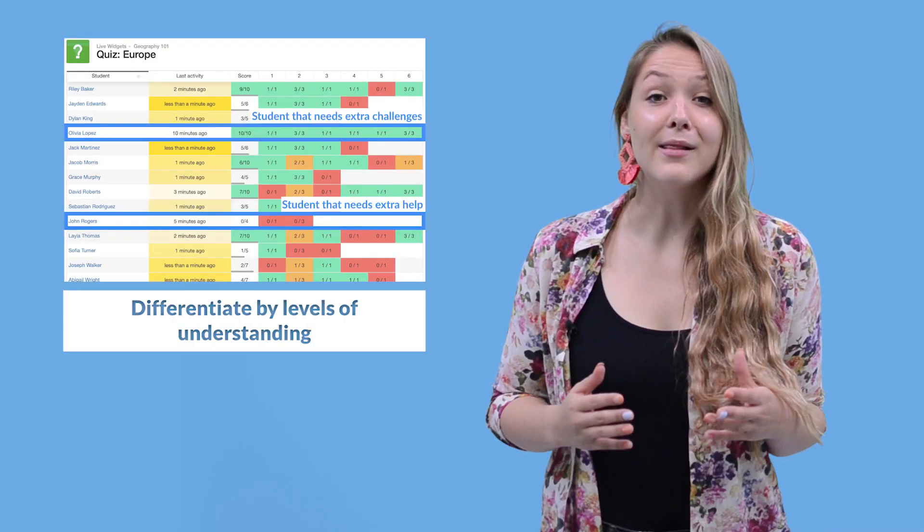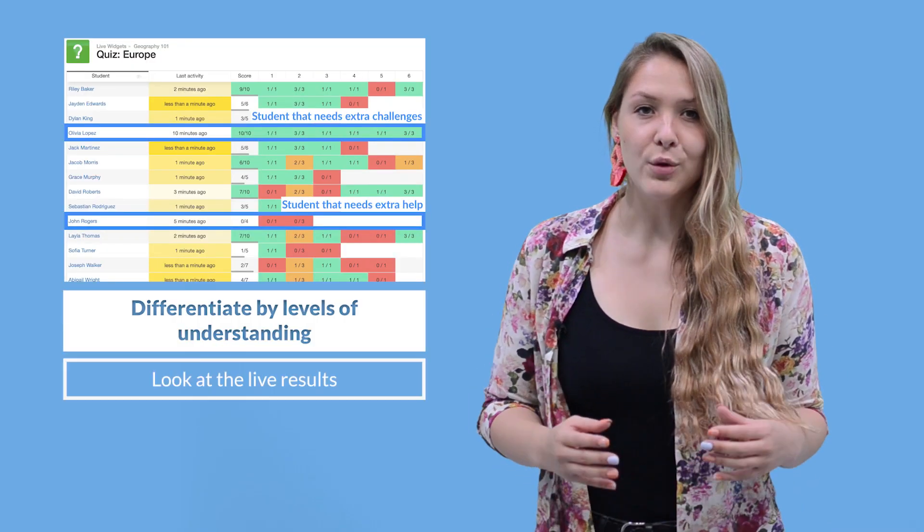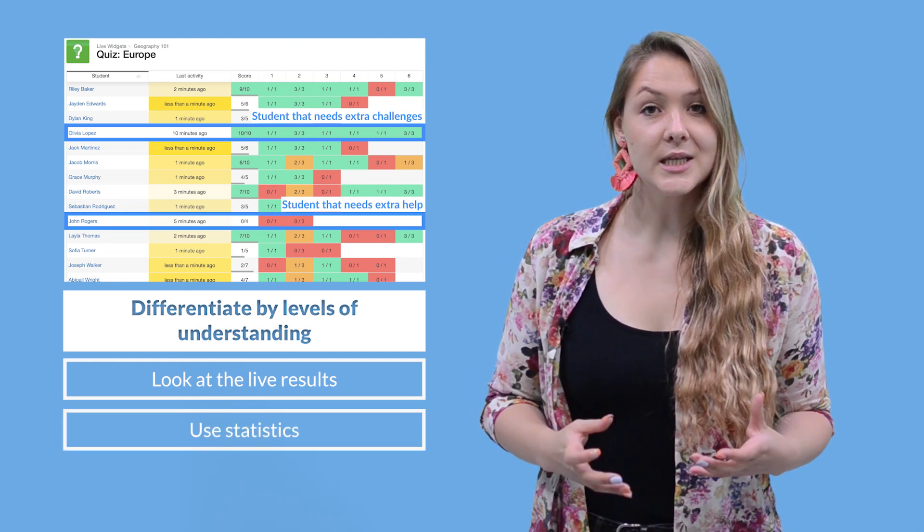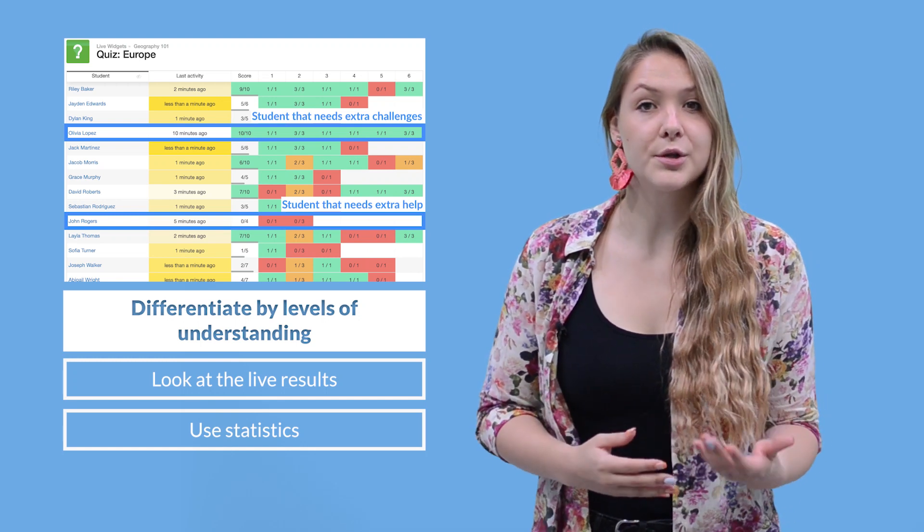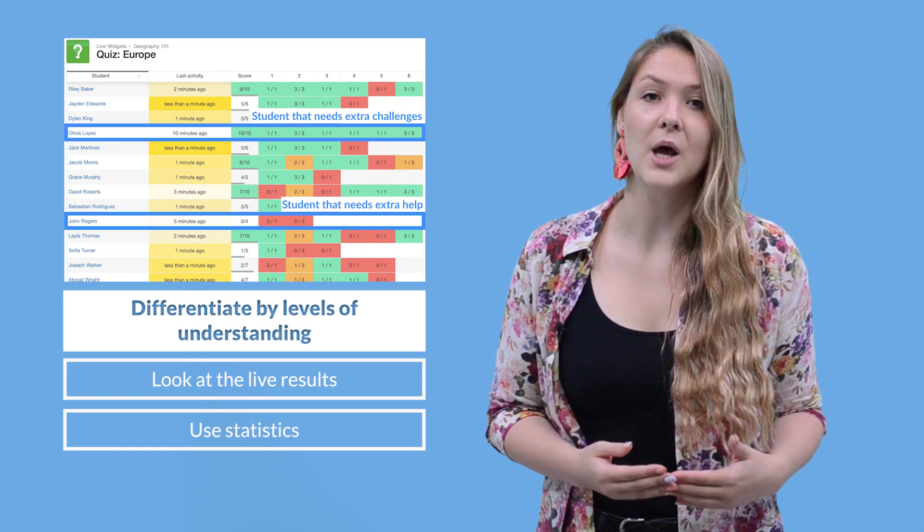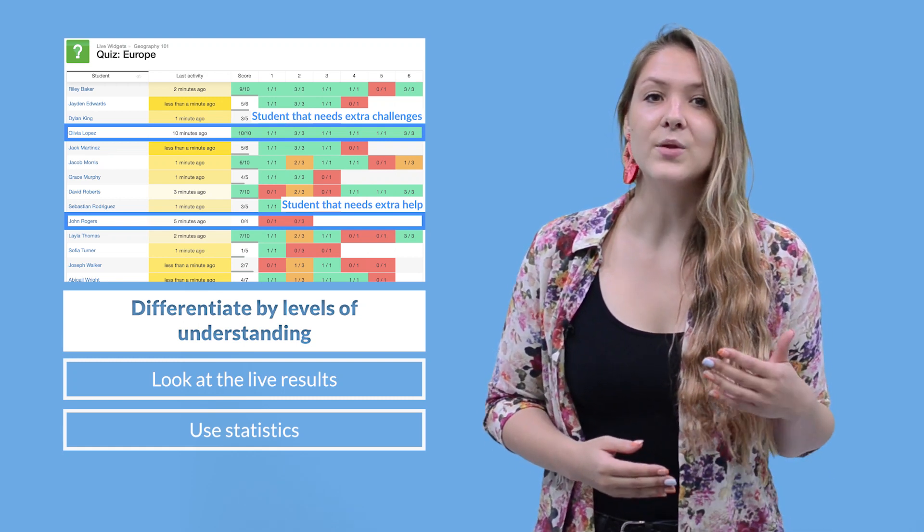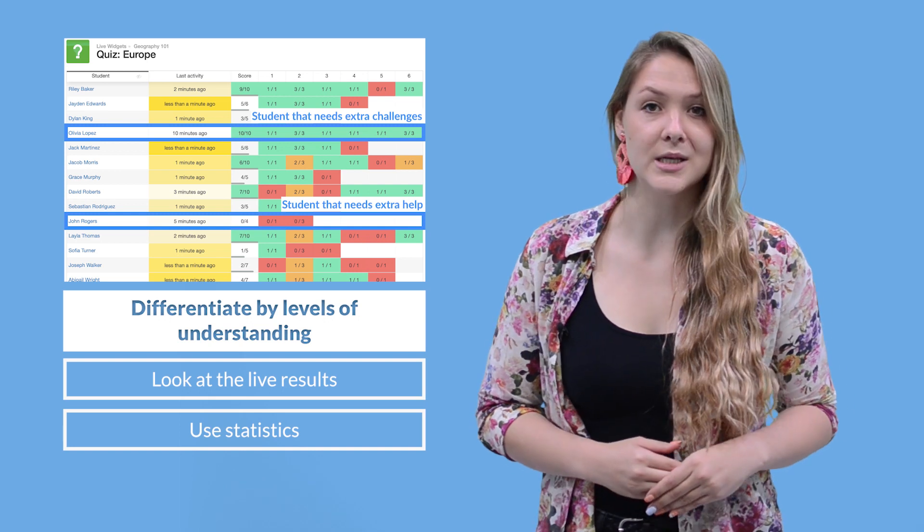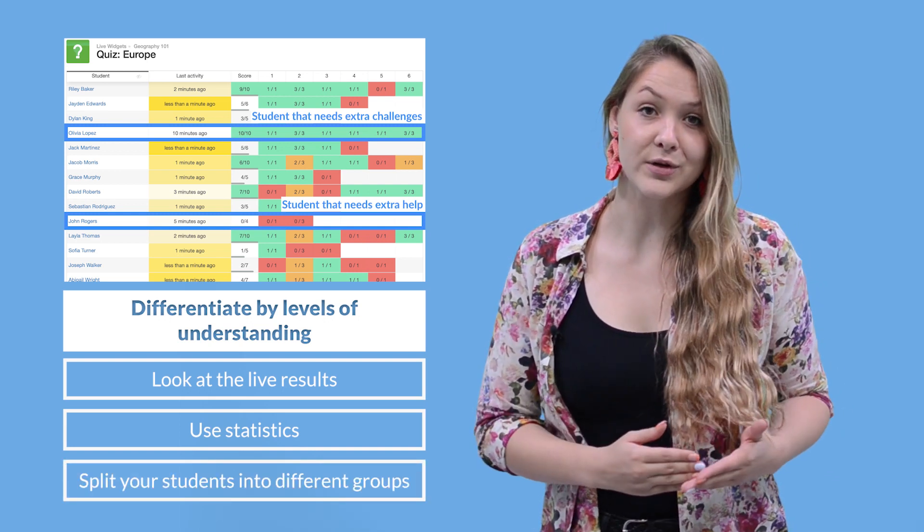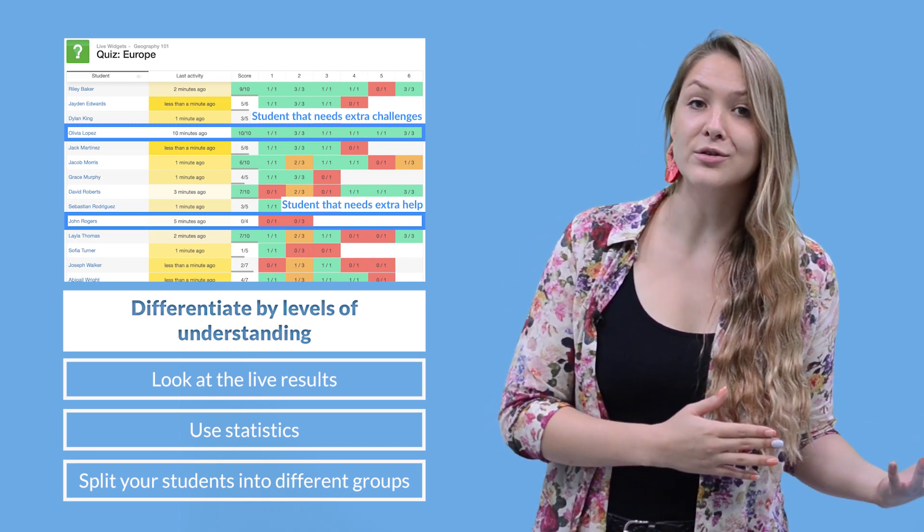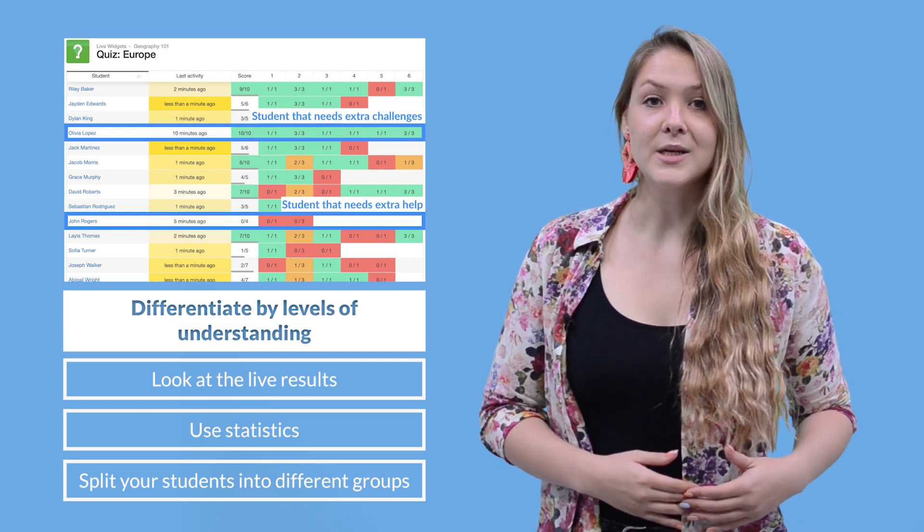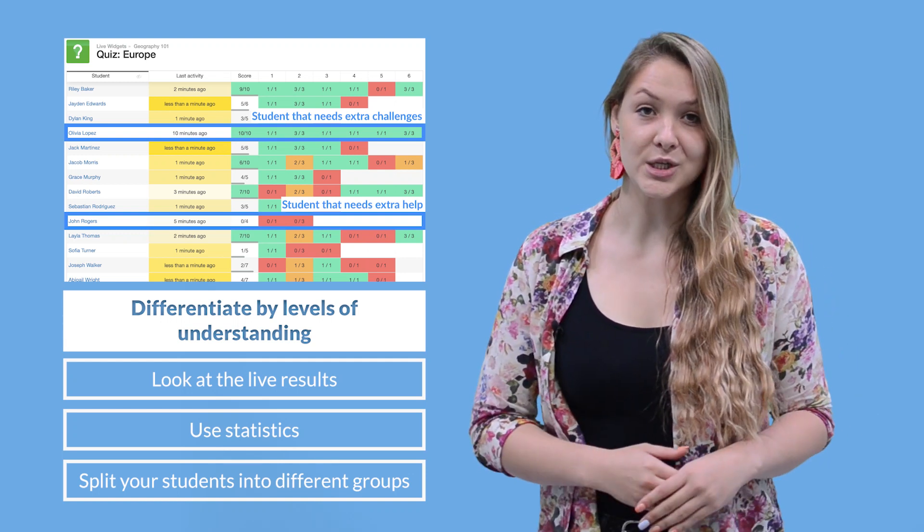Three, differentiate by levels of understanding. Look at the Live Widgets after an assignment or evaluation. Use the statistics to find out which students are slow to solve the assignment, which students make many mistakes and don't understand well what they were taught, and which students finished earlier than the rest without mistakes. Use this information to split up your students into different groups. Groups that get more time to work on exercises, groups that get more instructions from you, and groups that get more advanced assignments on the same material.